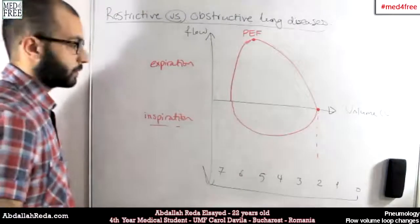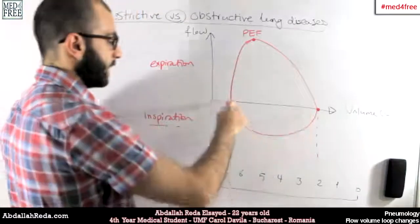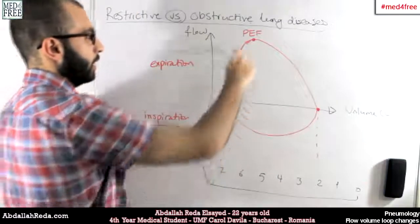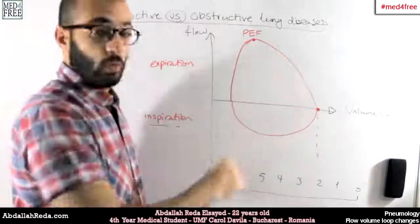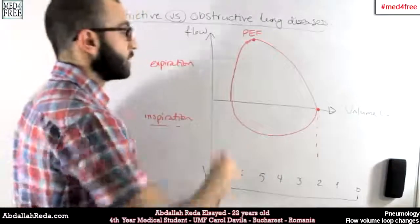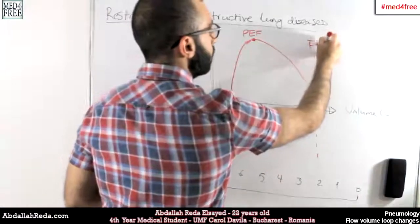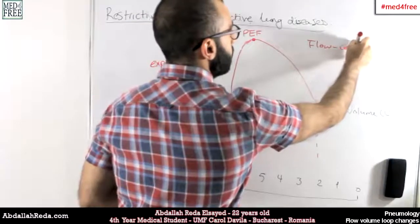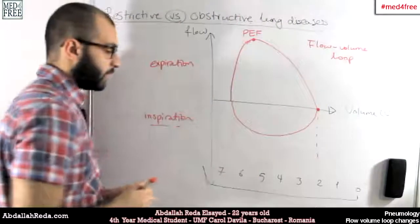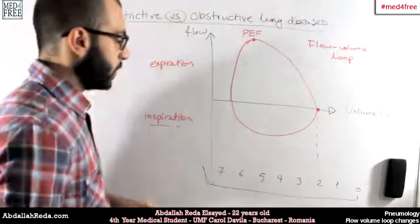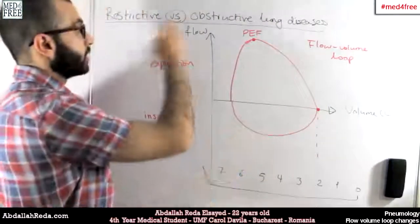Then we have the phase of inspiration where the lung fills again, going back to the maximum volume, and then expiration takes place and so on. You can see this forms a loop — this is called the flow-volume loop.